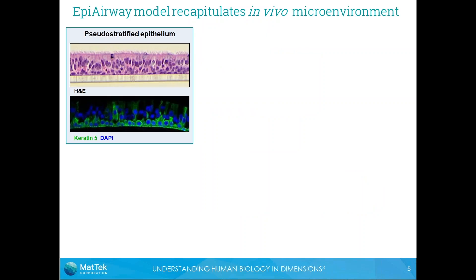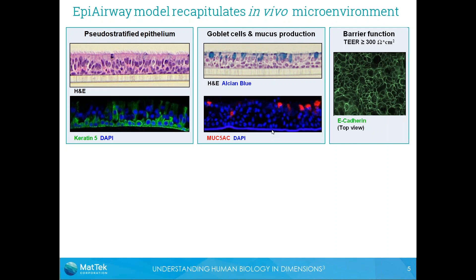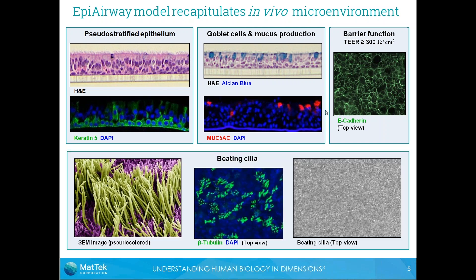To provide more detail on the characterization of this model and how it recapitulates the in vivo microenvironment: in cross sections you can see a nice pseudo-stratified epithelial tissue on the microporous membrane. Basal cells stain positive for Keratin 5, and goblet cells are present producing mucus, shown by blue staining for Alcian Blue and positive staining for MUC5AC, which is a mucin. These tissues also form an intact barrier, as shown by trans-epithelial electrical resistance values greater than 300 ohms per centimeter squared, and a top-down view of ZO-1 staining showing intact tight junctions.